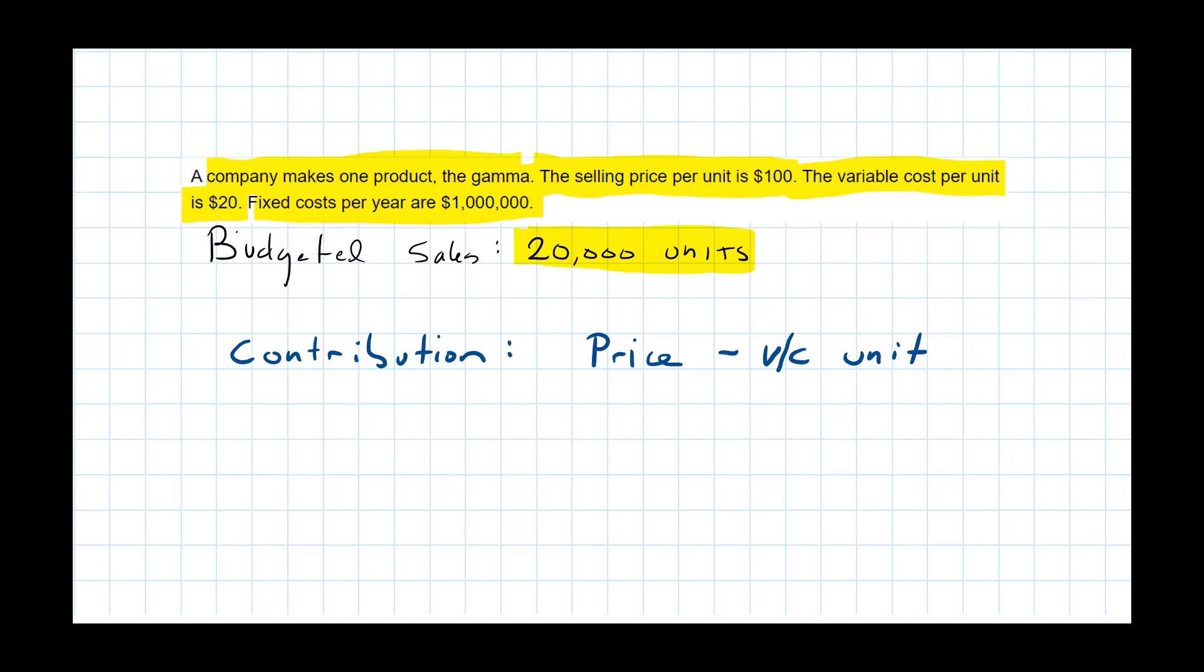Now to calculate the break-even point, which I'll abbreviate BEP, we need to find our fixed costs and then we divide the fixed costs by that contribution per unit. That will tell us the break-even point in units. If you'd like to pause the video here and try it yourself, that's a great thing to do.